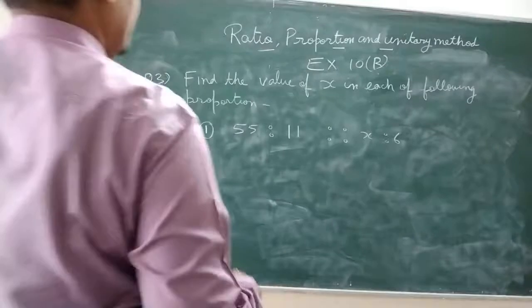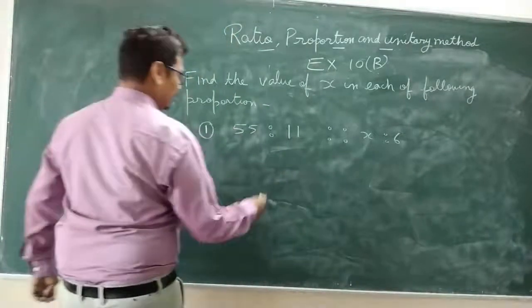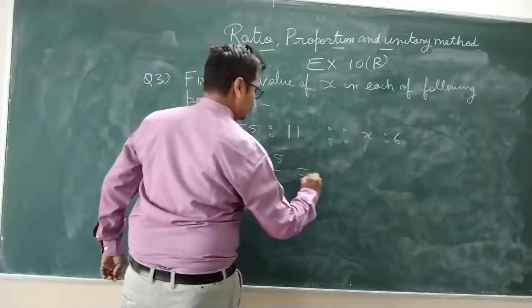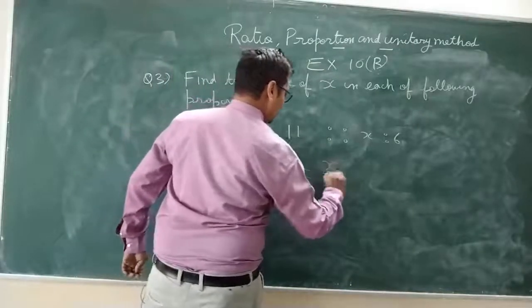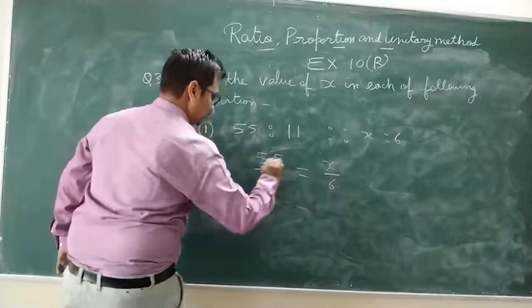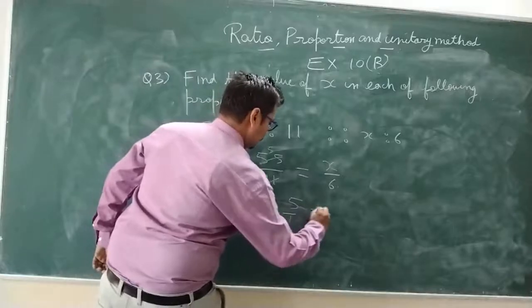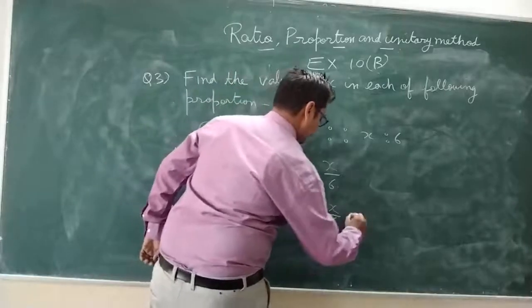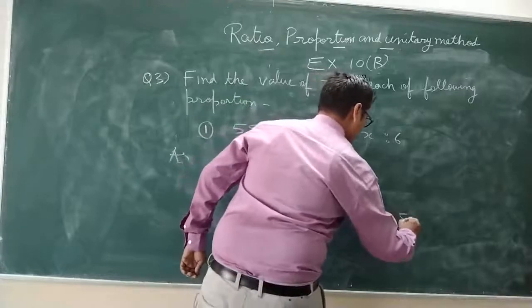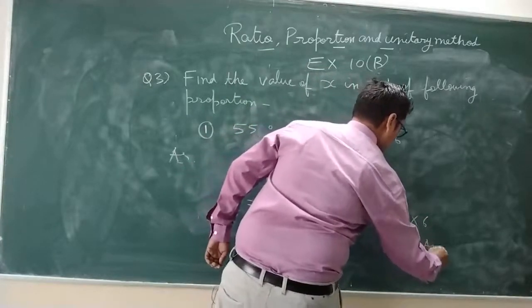Find the value of x in each of the following proportions. Here, 5 upon 1 equals x upon 6. So the value of x is 5 multiplied by 6, which is 30.